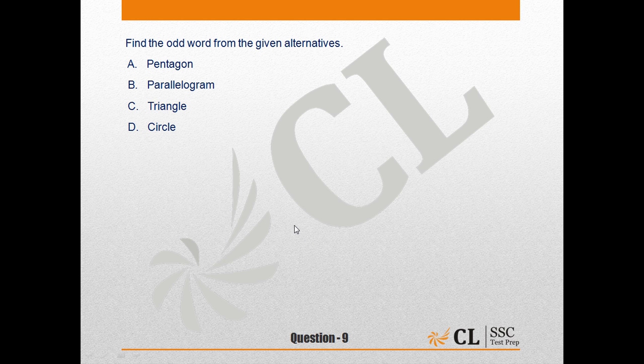Find the odd word from the given alternatives. There is a pentagon, there is a parallelogram, there is a triangle,